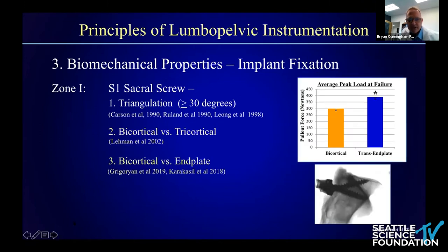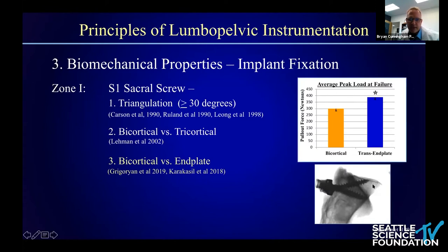A follow-up study by Gregorian et al. looked at pull-out strengths of bicortical screw fixation versus screws which penetrated the vertebral end plate. Screws that captured two cortices — particularly the vertebral end plate, which has a higher BMD than lower regions of the S1 vertebral element — had a higher pull-out strength. If clinically indicated, capturing that vertebral end plate can improve fixation.